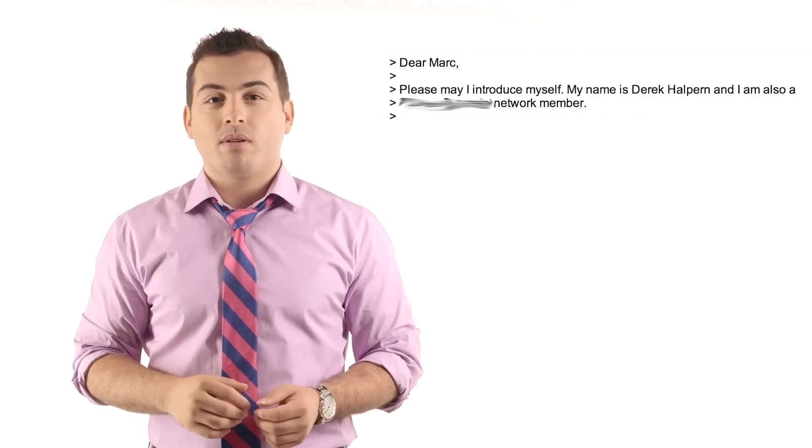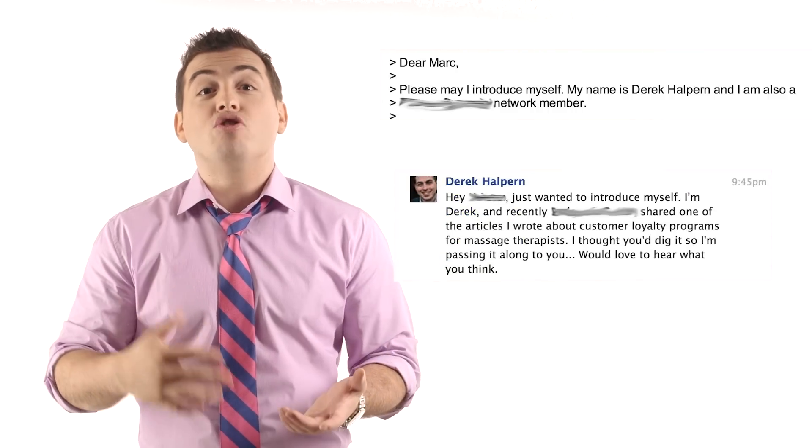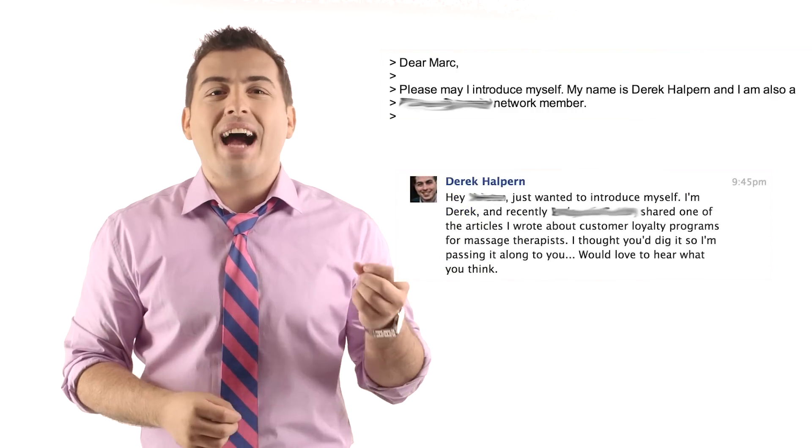Now, how can you craft similar messages that work? First, you want to look for common ground. In both messages, from 2008 and from recently, I established a common ground between myself and the person I was emailing. Did you notice? In the first email to Mark, I said we were both part of the same network group. In the second, I said one of her friends shared the article, so I thought she would like it too. That common ground adds a layer of trust that you wouldn't have had otherwise.